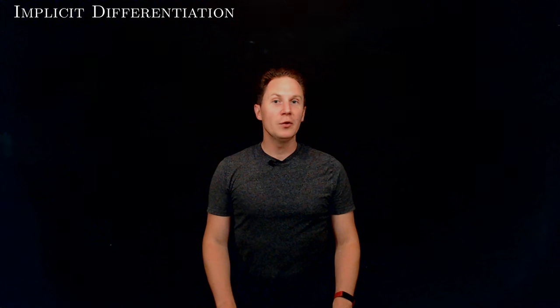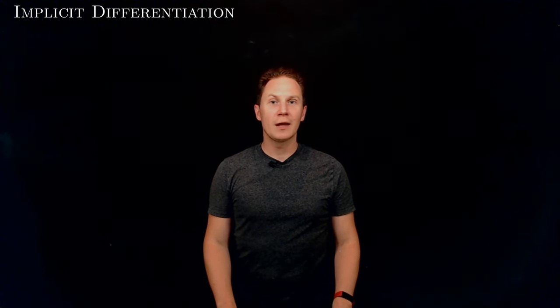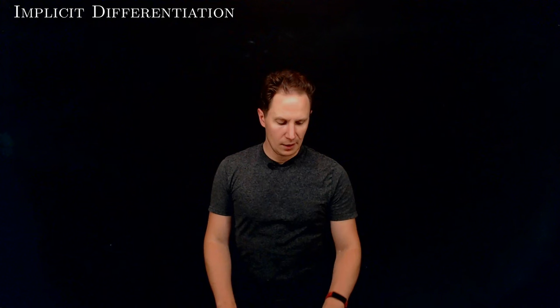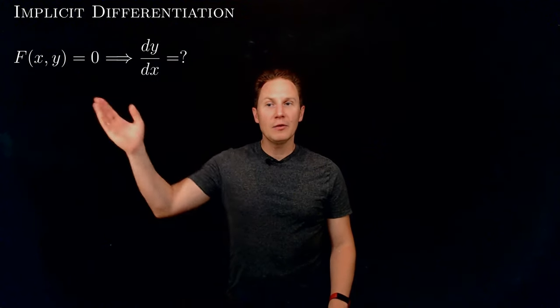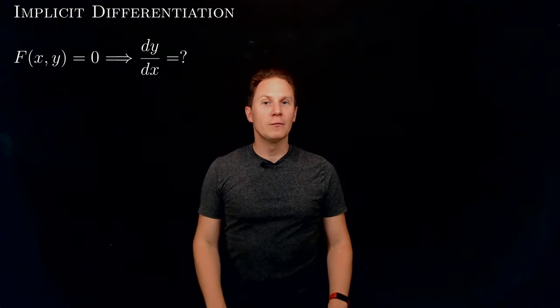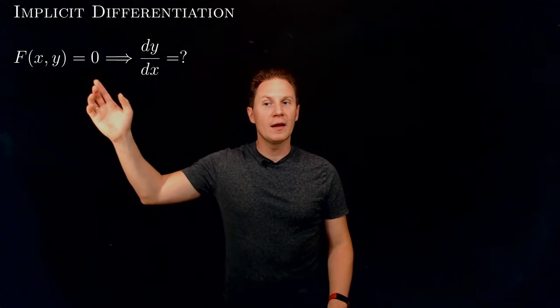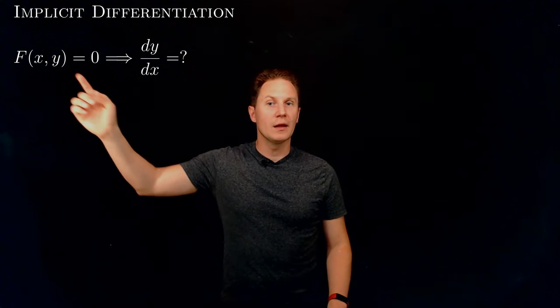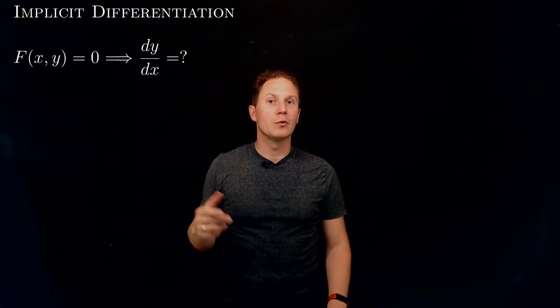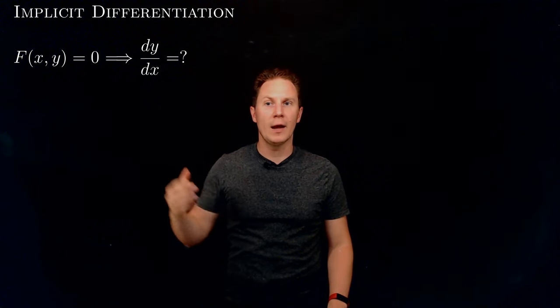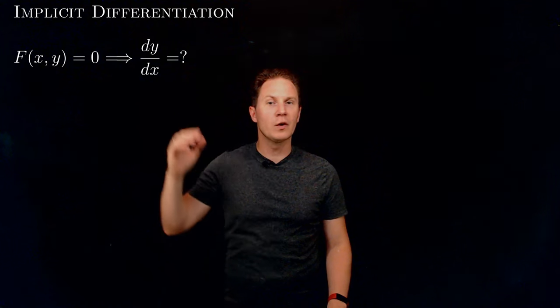The crazy thing about the chain rule is that it can be used to find the derivatives of functions that we don't even have explicit formulas for. Imagine you have an equation involving x and y. In this case we would say that y is defined to be a function of x implicitly — in a hidden way — through this equation.